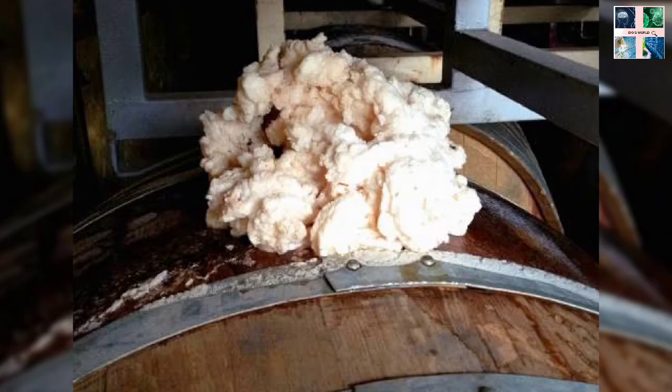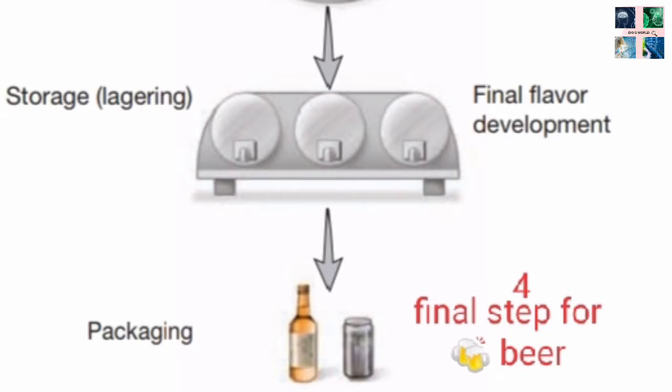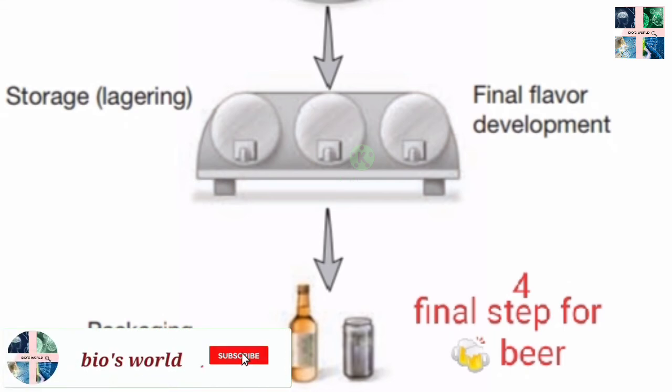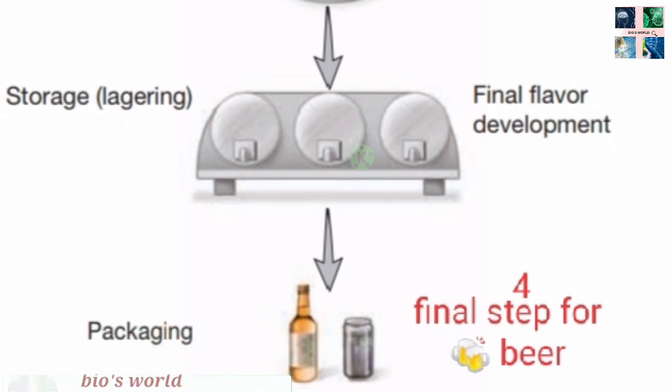The next step is storage. Young beer is stored for anywhere from 3 weeks to 3 months in storage tanks at a temperature of 1 to 2°C. As secondary fermentation takes place, remaining yeast particles and protein-tannin compounds sink to the bottom, so the beer becomes clear and acquires its characteristic color.